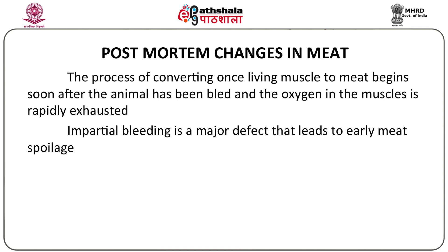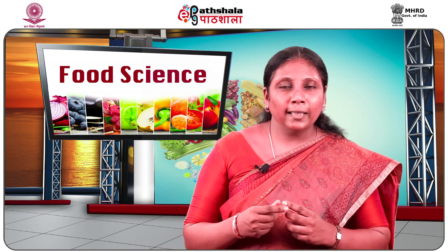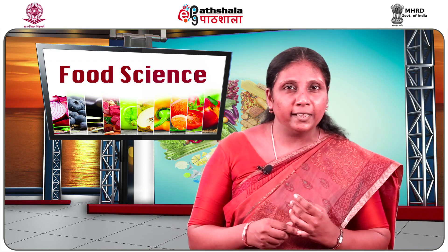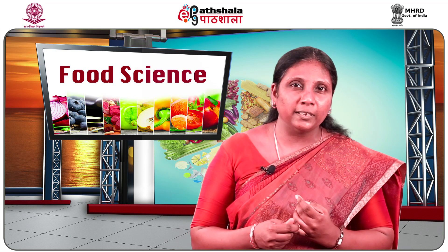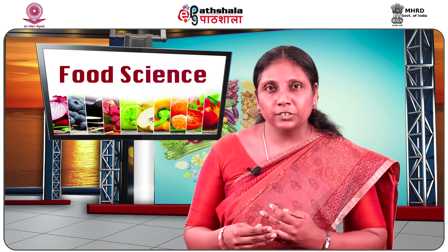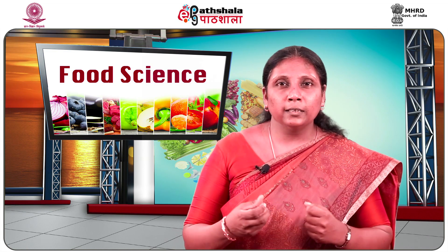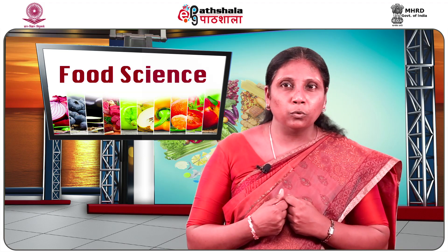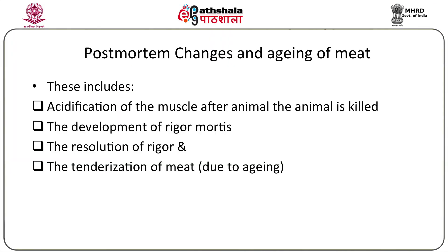After the animal is slaughtered, it bleeds to death and the oxygen in its muscle is rapidly depleted. Impartial bleeding is a major cause of early meat spoilage, so it should be ensured that the animal completely bleeds to death. There are four main changes that take place: number one is the acidification of the muscles; number two, the development of rigor mortis; number three, the resolution of rigor; and number four, the tenderization of meat that happens when the rigor resolves and the meat is aged.